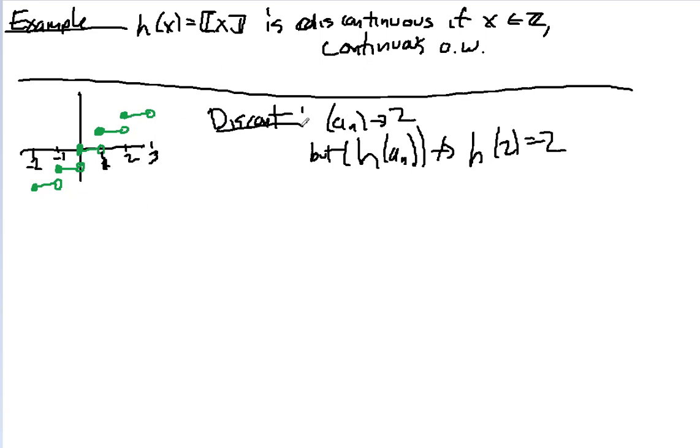And I'm going to show you that it's discontinuous at 2. The proof is going to look like just any other integer, but I'm just picking 2 to be concrete. The way I'm going to do that is the usual way you prove something is discontinuous. I'm going to find a sequence that converges to 2, but h of that sequence is not going to h of 2.